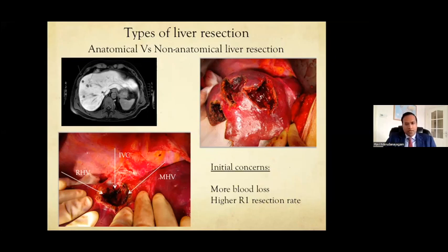R1 vascular resection has the same long-term survival as R0. R1 vascular means a lesion touching any major hepatic inflow or outflow — if you can't resect the vessel without compromising the FLR, peel it off and accept R1. These patients have the same long-term survival as R0, because colorectal mets just push blood vessels rather than infiltrate them, unlike HCCs. Don't deny surgery because a large lesion is pushing on the middle hepatic vein — accept R1 vascular as equivalent to R0.